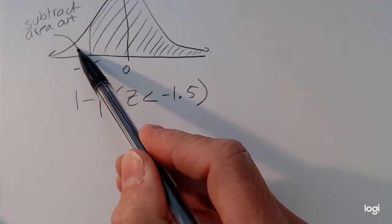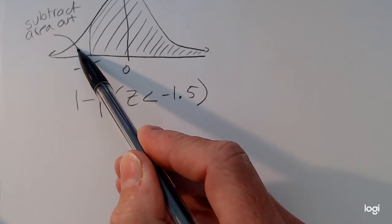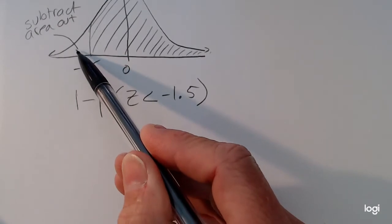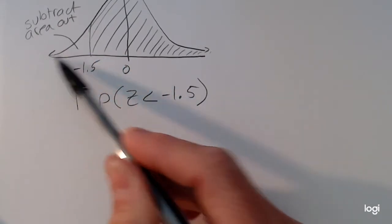And the reason why we have to do it this way is because of how the table reads. The table reads cumulatively left to right.